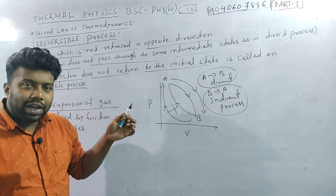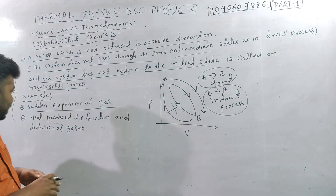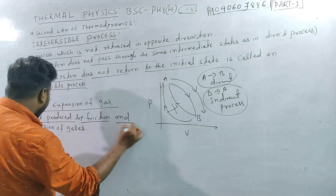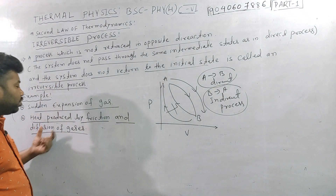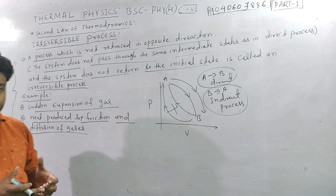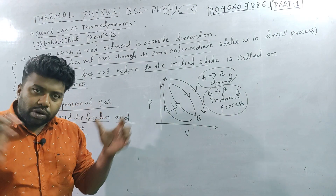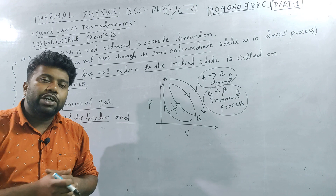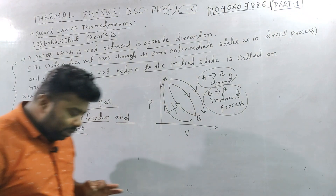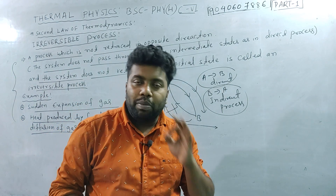You can see the same state from the next step. Heat produced by friction and diffusion of gas — you can see the heat produced by friction and diffusion of gas. You can see the initial state from the next step and see all the details in the video.